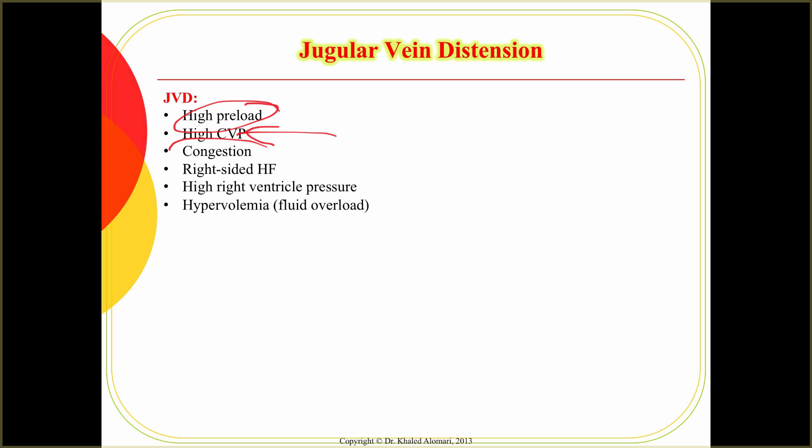JVD could be not just high volume coming back, but also congestion. If there's congestion on the left side of the heart, it will back up and affect the right side of the heart — you can think of it as traffic on a freeway. That's why you will see JVD. It could also indicate right-sided heart failure leading to congestion.